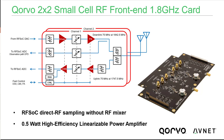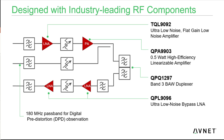The front end used for prototyping over the air is the Quovo 2x2 small cell RF front end. This operates at 1.8 GHz and allows direct RF sampling with no RF mixer, as you can see in the simple block diagram. This card features a high-efficiency linearizable power amplifier and has been designed with industry-leading RF components: the TQL-9092 low noise flat gain amplifier, the QPA-9903 high-efficiency linearizable amplifier, the QPQ-1297 duplexer, the QPL-9096 low noise bi-directional amplifier, and a 180 MHz passband for digital pre-distortion observation.